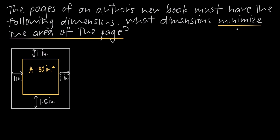So how would we represent the area of this larger page? We're just looking at a rectangle, and we know that the area of a rectangle is length times width. If we say this is the width of the page and this is the length of the page, then we can say area is equal to length times width. This will be our optimization equation.